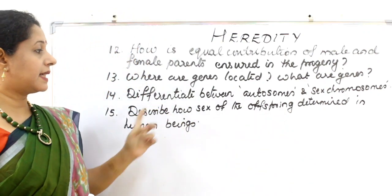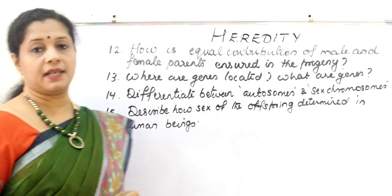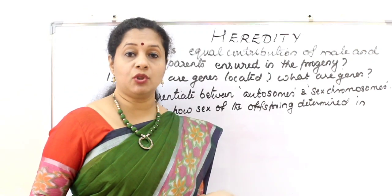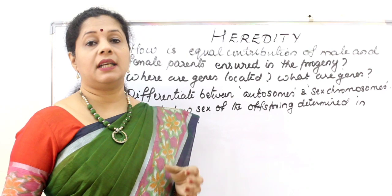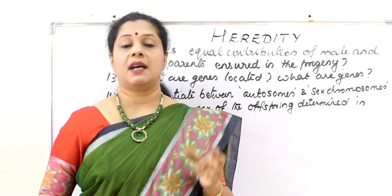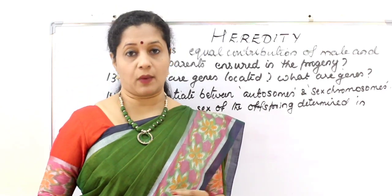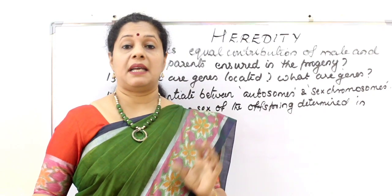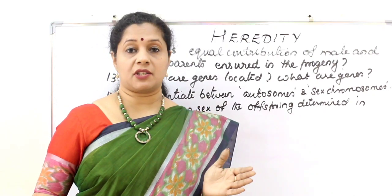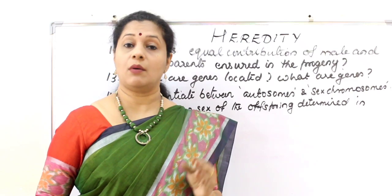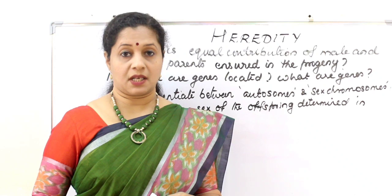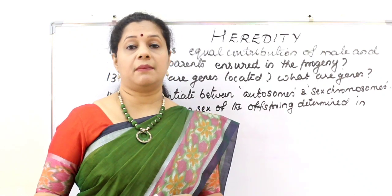Describe how the sex of the offspring is determined in human beings. Males have 23 pairs of chromosomes; the last pair — the sex chromosomes — is dissimilar: X and Y. Males produce 50% sperm with X chromosomes and 50% sperm with Y chromosomes. In females, the sex chromosomes are identical — both are X chromosomes.